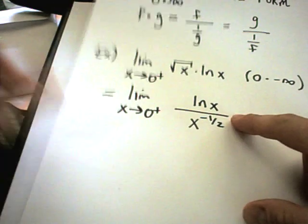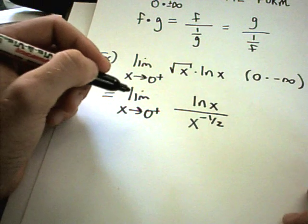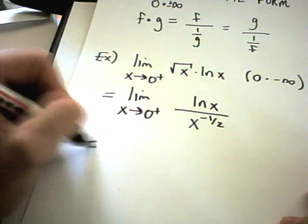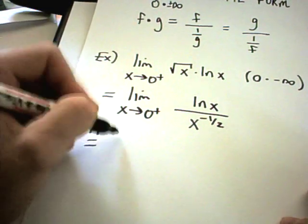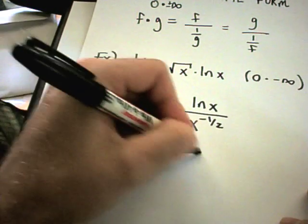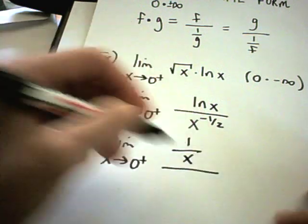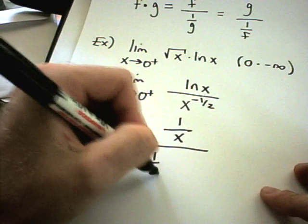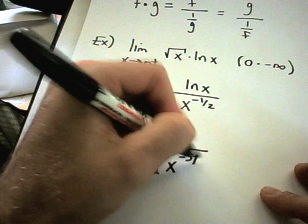And you can convince yourself this is now going to be of the form infinity over infinity. So I'll use L'Hopital's rule. Well, the derivative of ln of x is 1 over x. In the denominator, I'll get negative 1/2 x to the negative 3/2.